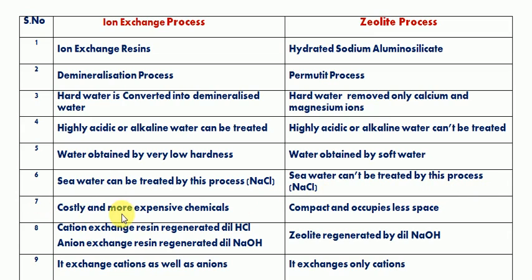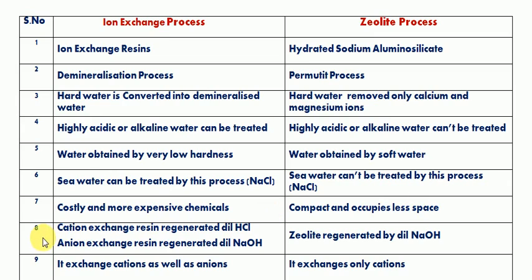The ion exchange process is costly, and more expensive chemicals are needed to run it. In contrast, the zeolite process is compact and occupies less space, so it can be used easily.